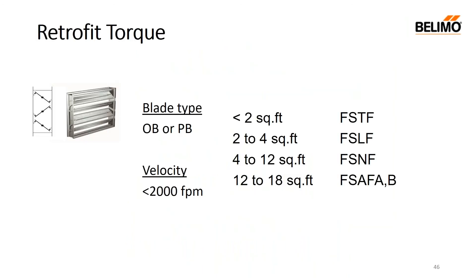For torque in retrofit selection, here are the rules of thumb: for less than two square feet use the TF model; two to four square feet use the LF, which meets UL 555 testing; four to twelve square feet go to an FSNF; up to 18 square feet use the modulating actuator or RFSAF. These apply at velocities less than 2000 feet per minute. The product guide and price list includes guidance for higher velocities.